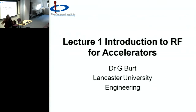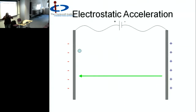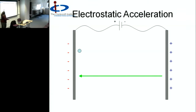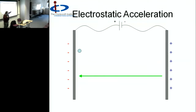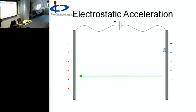The very basics of acceleration: you have a charged particle, and you can accelerate it by having two plates with the same charge on one plate and the opposite charge on the other, setting up an electric field. The electron will be accelerated towards the positive plate and repelled by the negative plate, so it will be attracted across and will accelerate as it does so. That's the simplest type of accelerator - electrostatic accelerators.